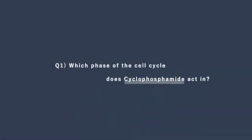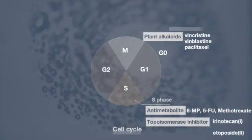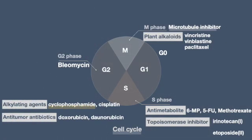Which phase of the cell cycle does cyclophosphamide act in? Alkylating agents cause direct damage to DNA, classifying them as non-cell cycle-specific agents due to their broad impact on cells throughout various stages of the cell cycle.